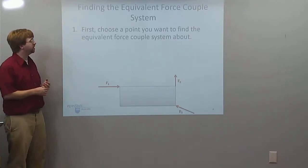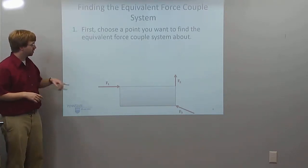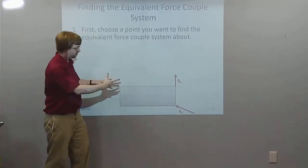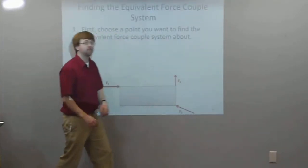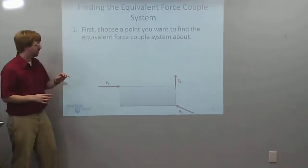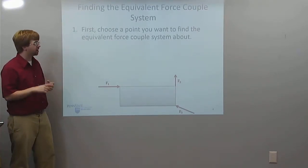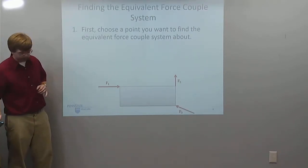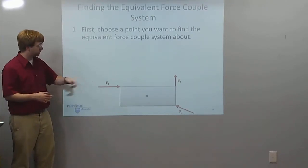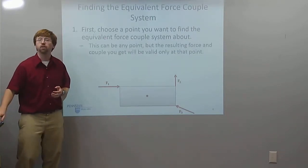So how do we go about doing that? First, choose a point that we want to find the equivalent force couple system about. So down here, I've got a body, just some block, with force one, force two, force three. We've got three forces acting on it, and they're not concurrent, so they're going to be exerting some moments here. I want to find a single force, single moment that's going to be equivalent. So I choose a point. In this case, I'm going to choose the middle.